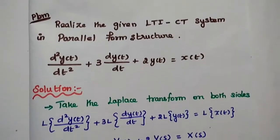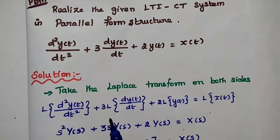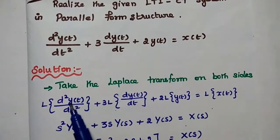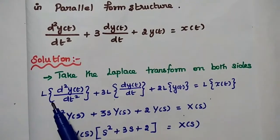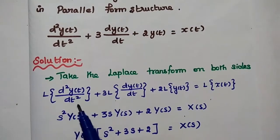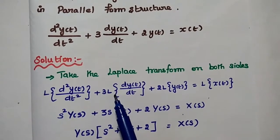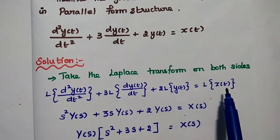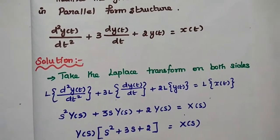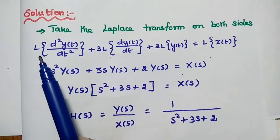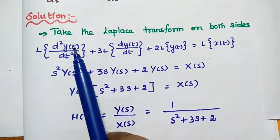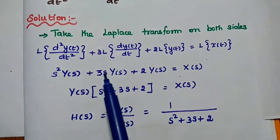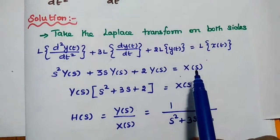In the solution, the first step is to take the Laplace transform on both sides of the given differential equation. We get: Laplace transform of d squared y(t) by dt squared plus 3 times the Laplace transform of dy(t) by dt plus 2 times the Laplace transform of y(t) equals the Laplace transform of x(t). Since the Laplace transform of d squared y(t) by dt squared is s squared Y(s), we get s squared Y(s) plus 3s Y(s) plus 2Y(s) equals X(s).